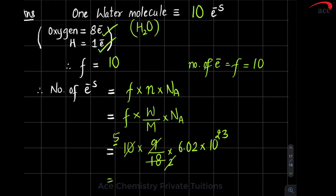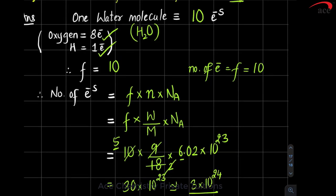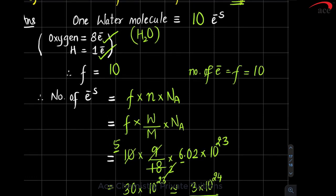Solving: 10 × (9/18) × 6.02 × 10²³ = 5 × 6.02 × 10²³ ≈ 30 × 10²³ electrons, or 3 × 10²⁴ electrons.